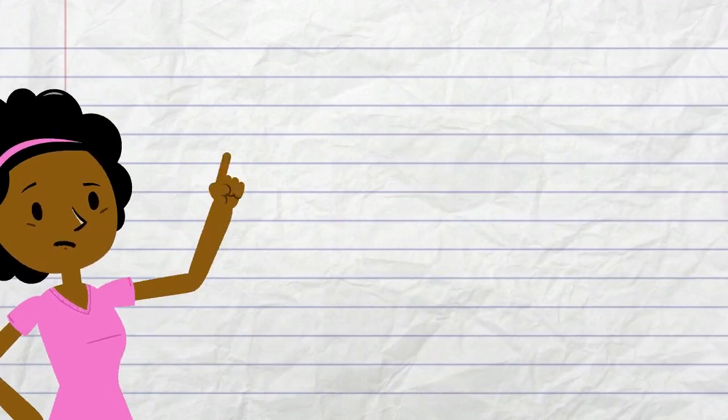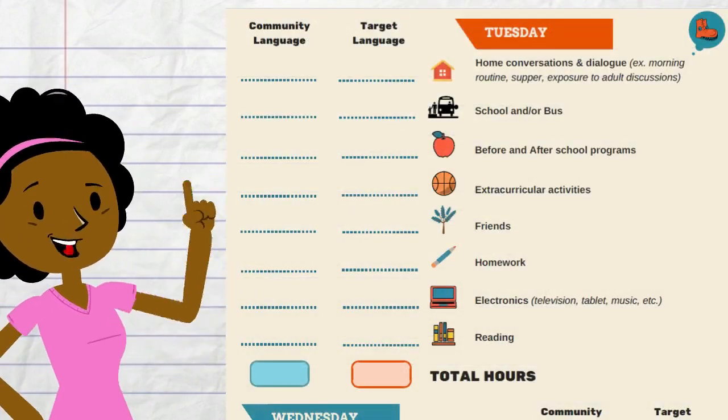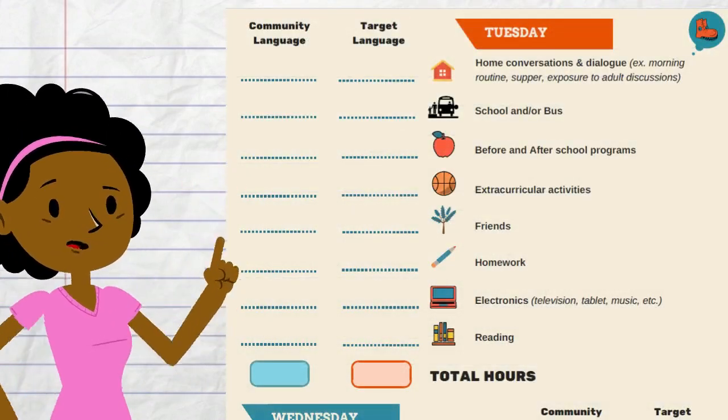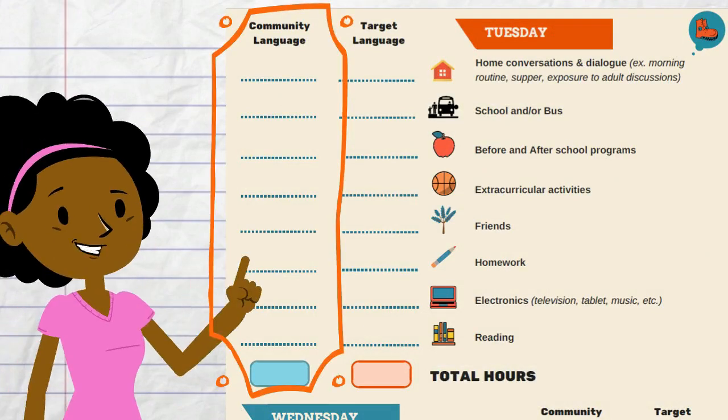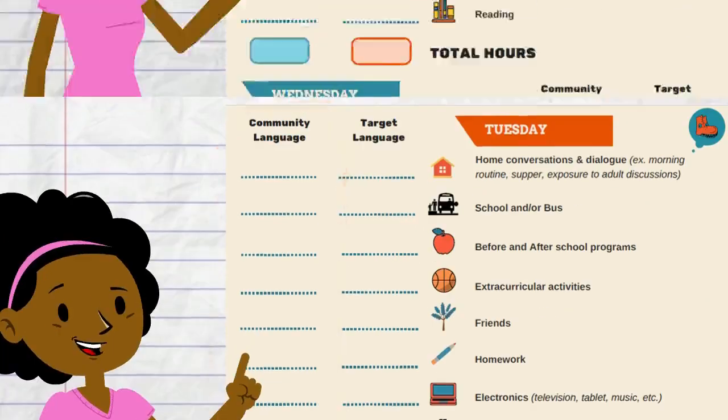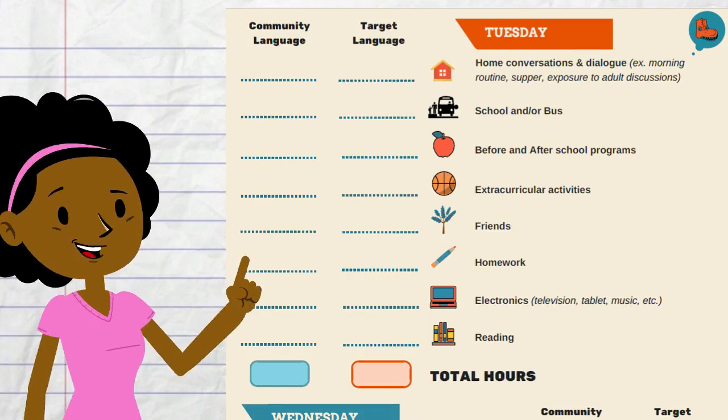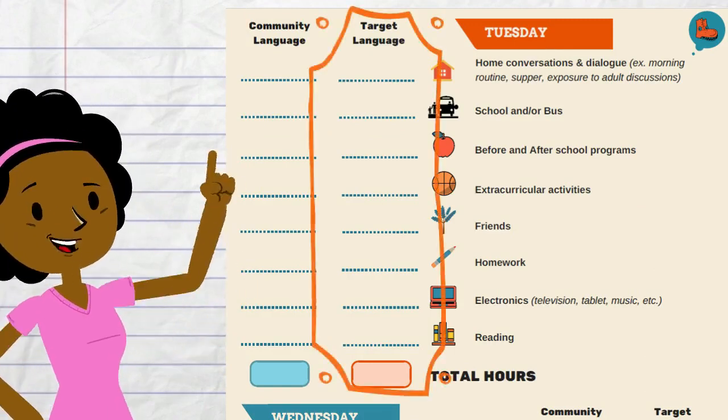This means if the community language is English, the hours during which the child is exposed to the English language should be entered in this column. If the target language is French, the hours during which the child is exposed to the French language should be entered in the other column.